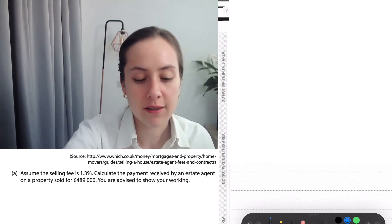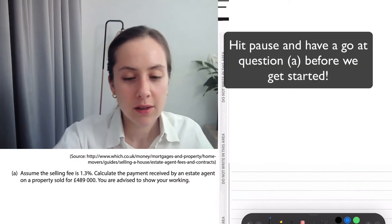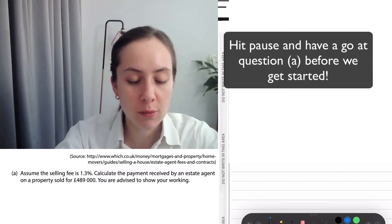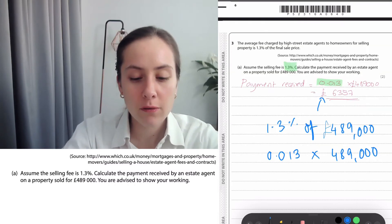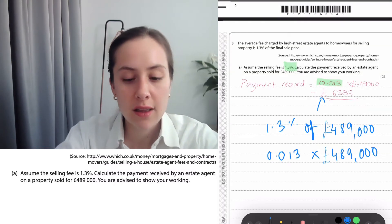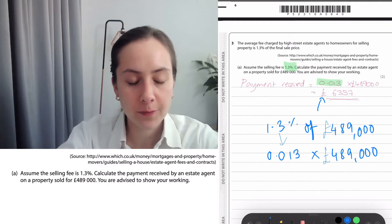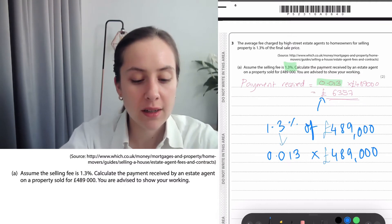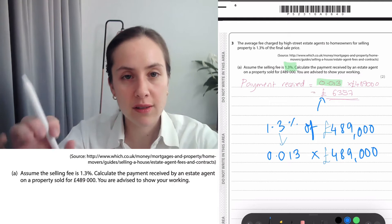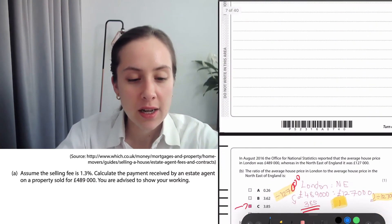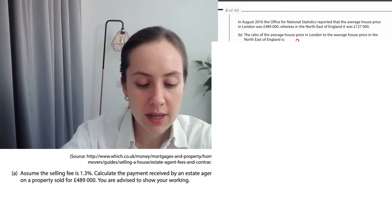Here is an estate agent that got a commission of 1.3% of the 489,000 pounds that they sold the house for. 1.3%, you can find that by doing 0.013 times the 489, and then you get the payment that was received by the agent.